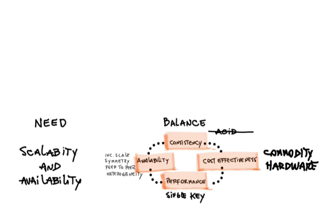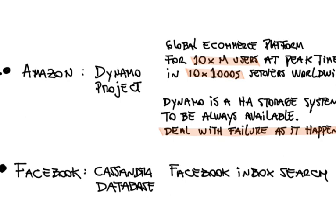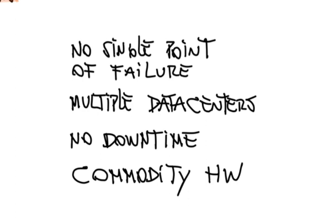And Avinash's next project was to work for Facebook, creating the Cassandra database. Its main purpose was to deal with the inbox search. The requirements were really high: not having a single point of failure, being deployed in multiple data centers with no downtime allowed, and running on commodity hardware, for sure.